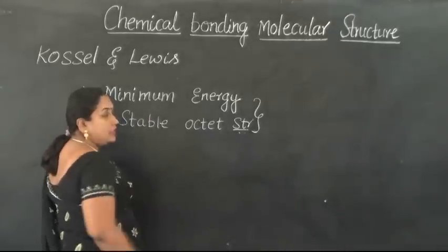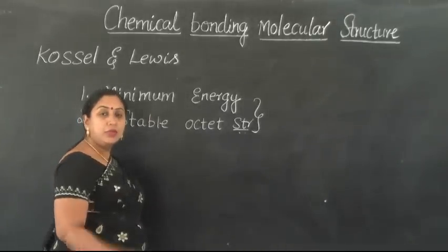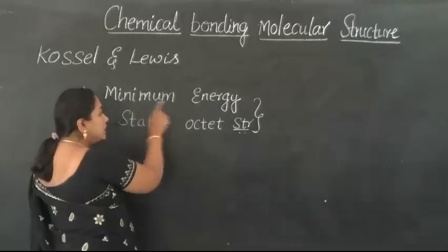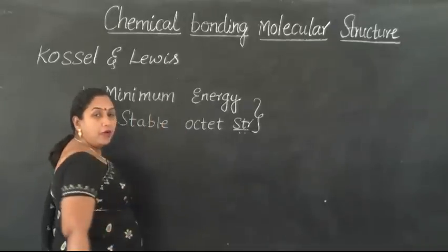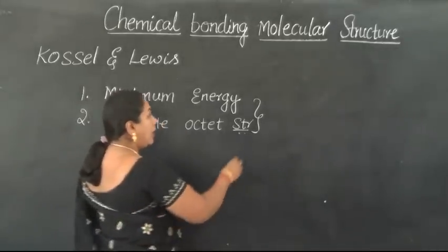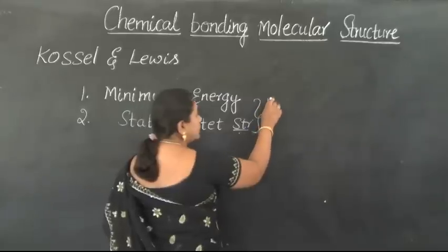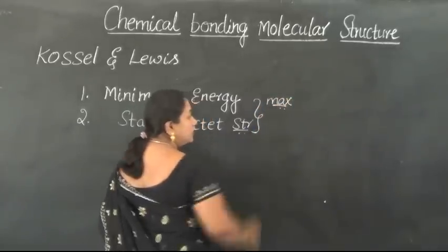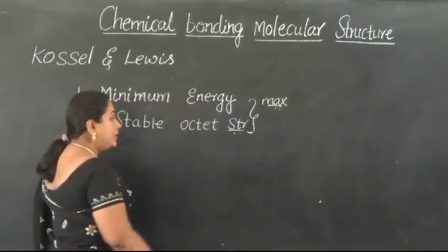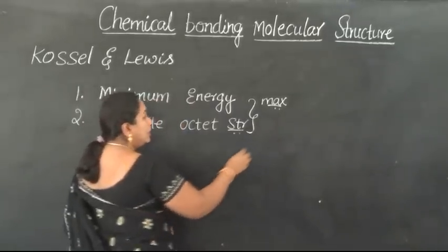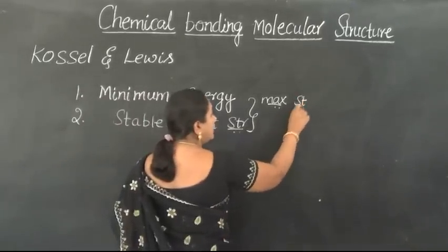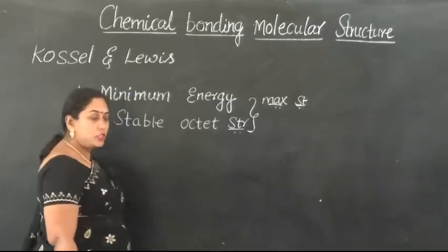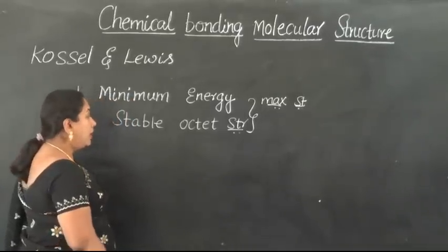The first reason is they try to possess minimum amount of energy. If they possess minimum amount of energy, they will have maximum stability. Lower the energy, higher the stability. So they will possess maximum stability if they possess lower amount of energy.